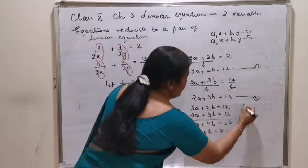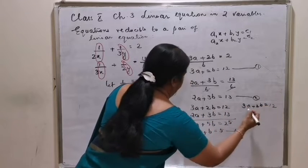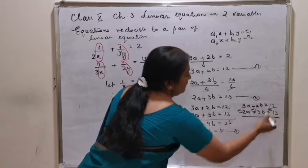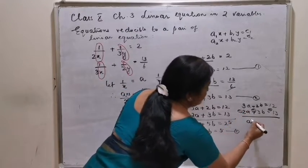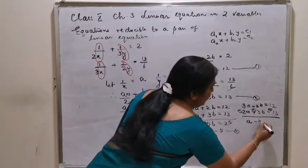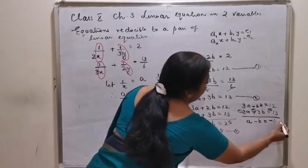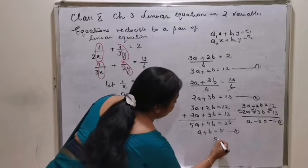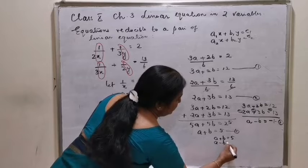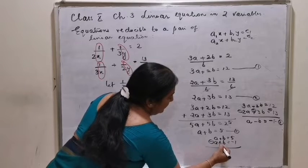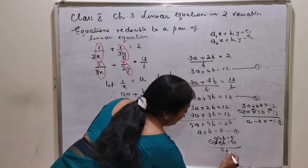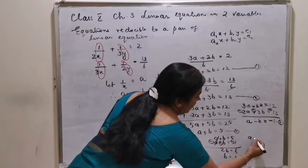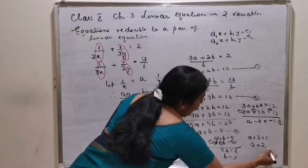Now you subtract the equations. 3a minus 2a is positive a; 2b minus 3b is negative b, equal to minus 1. So a minus b is equal to minus 1. The solving is very simple: a plus b is equal to 5, a minus b is equal to minus 1. Adding: 2a is equal to 4, so a is 2. Subtracting: 2b is equal to 6, so b is 3.